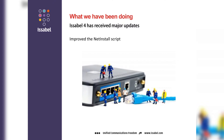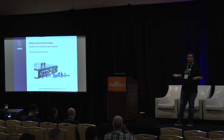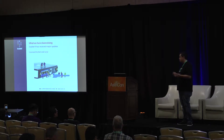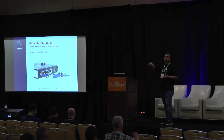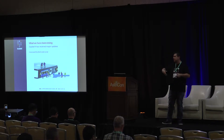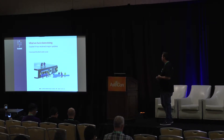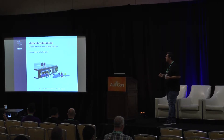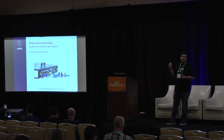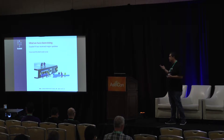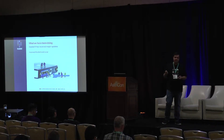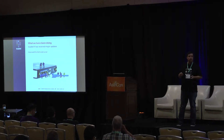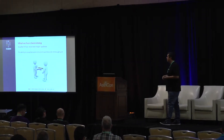We also improved the net install script. We know the trends — everything is cloud-based right now. Many users decide to create a droplet somewhere and just install Isabel there and run it. So we have a net install script with two lines of code. You can install Isabel on a CentOS-based virtual machine or droplet, wherever you want. We improved it in the last version.